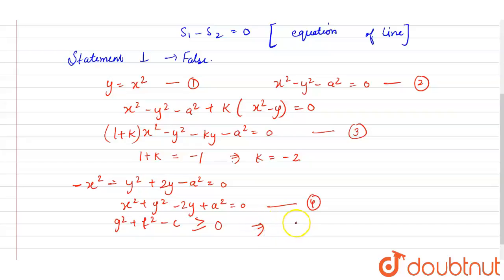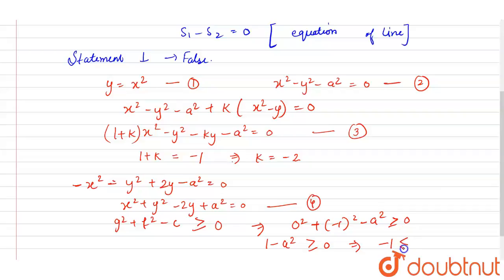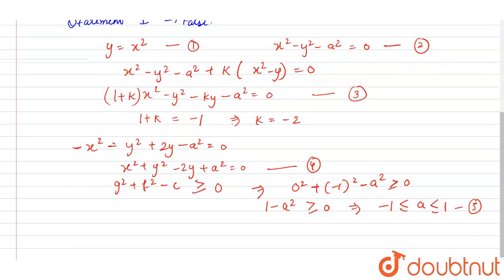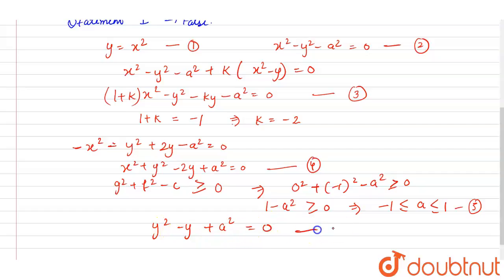Applying the condition, it becomes 0 squared plus (minus 1) squared minus a squared greater than or equal to 0, which gives 1 minus a squared greater than or equal to 0. Therefore a must lie between minus 1 and 1 — call this equation 5. Now substituting the value of x squared from equation 1 into equation 2, we get y squared minus y plus a squared equals 0 — call this equation 6.